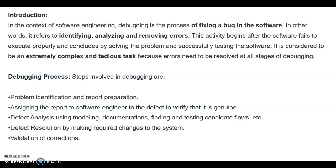Debugging occurs as a consequence of successful testing. This is when a test case uncovers an error. Debugging is the process that results in the removal of the error. In the context of software engineering, debugging is the process of fixing the bugs in the software — that is, identifying, analyzing and removing errors.